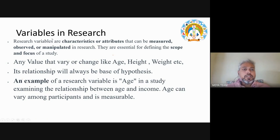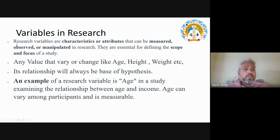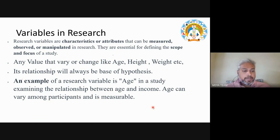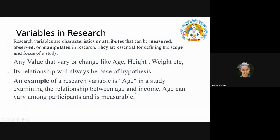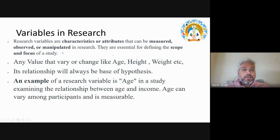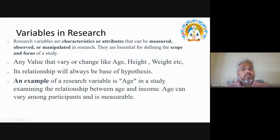Let's understand about variables — how many types of variables are used in research. This is important when you go for the process of research formulation. Research variables are characteristics or attributes that can be measured, observed, or manipulated in research. They are essential for defining the scope and focus of a study.